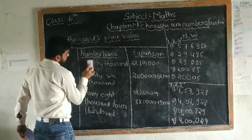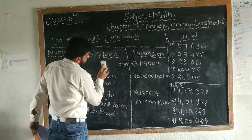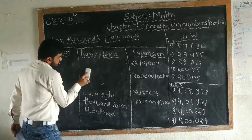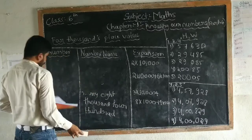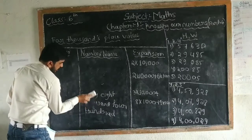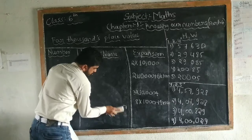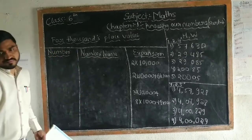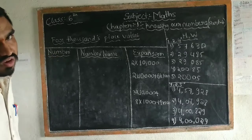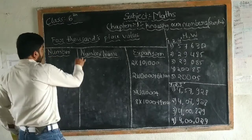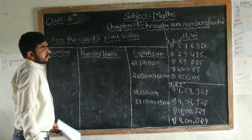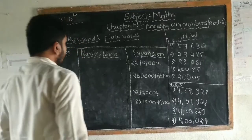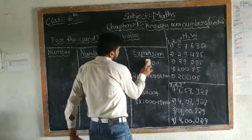In the textbook they are given so many numbers and so many expansions. You have to go through page number 6 and you have to do all of them in classwork. Don't forget — write all of them. Some students are writing only what is written on the board in their classwork, but you have to write all of them in classwork.